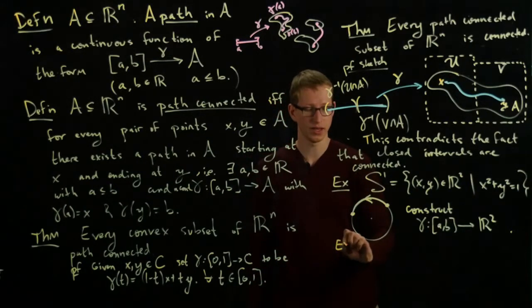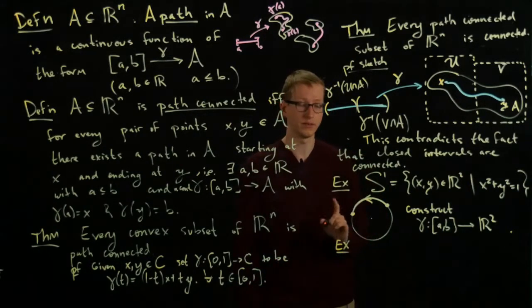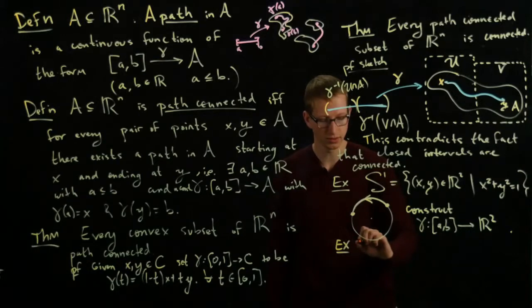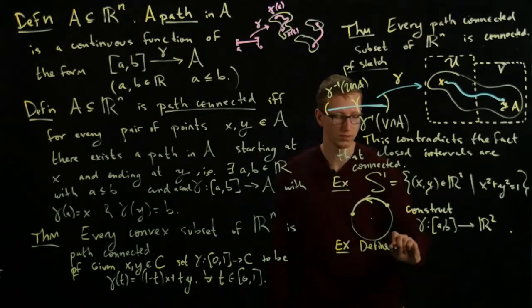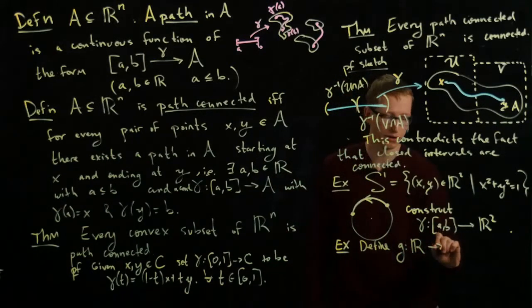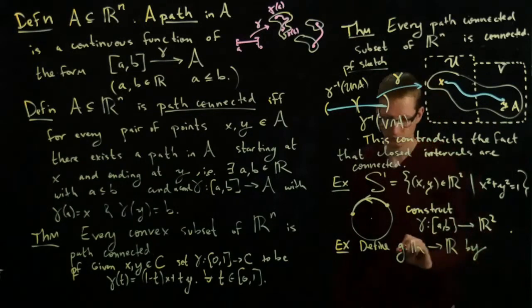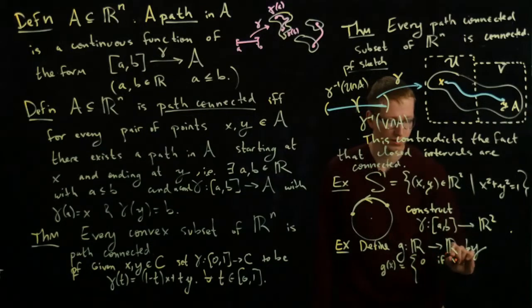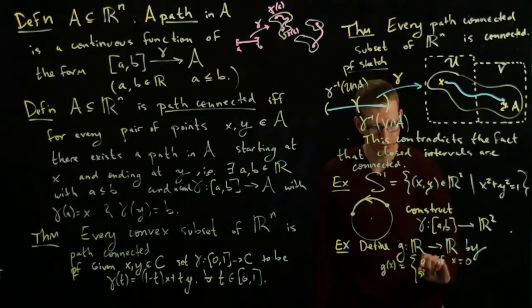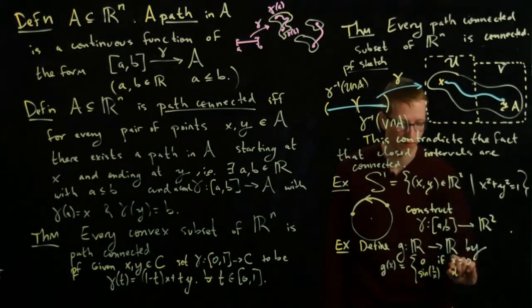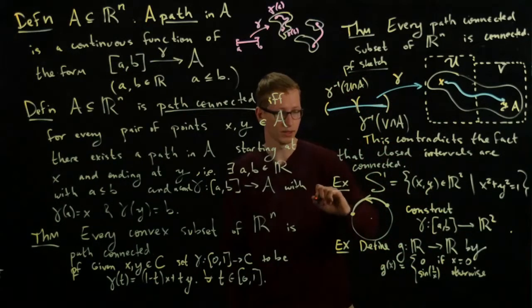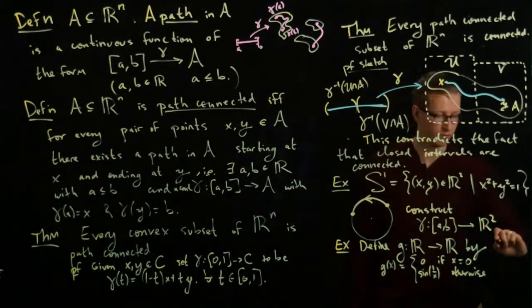One of the interesting counterexamples is probably related to a function that you've probably seen before. And this function is the topologist's sine curve. So define a function g from R to R by g of x equals 0 if x equals 0, and sine of 1 over x otherwise.